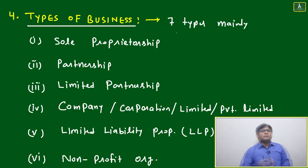Types of business - there are mainly seven types. If you want to establish any type of company or business, you have to pick one out of these seven types.